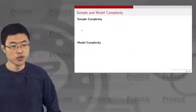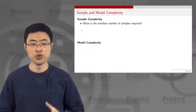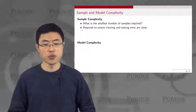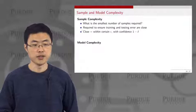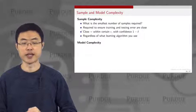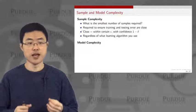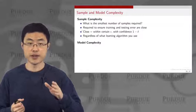What is sample complexity? Sample complexity asks the question of what is the smallest number of samples that we need to learn well in this learning problem — that is required to ensure that the training and testing errors are close, meaning within a certain epsilon with a certain confidence 1 minus delta. This is true regardless of what learning algorithm you use. So sample complexity captures the number of training samples needed to achieve your epsilon and delta such that your generalization, your testing error, is close to your training error.